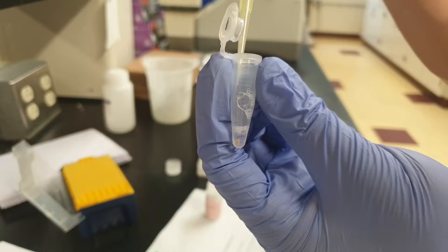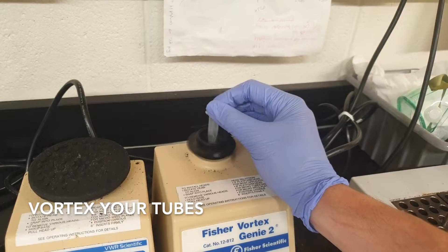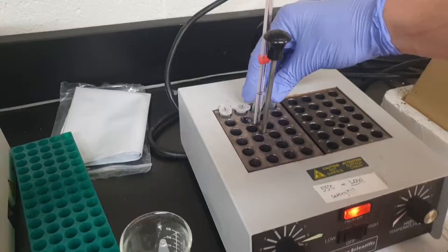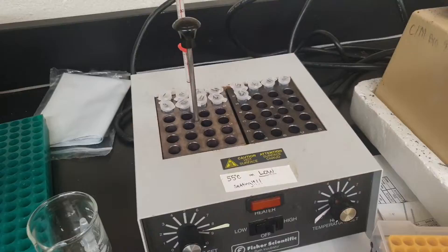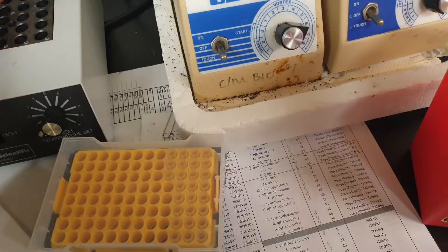Now this is going to start the lysis process. Vortex your tubes, then put your tissues on a hot plate at 56 degrees Celsius for about 2 to 12 hours. If you can, vortex your tubes once every hour.